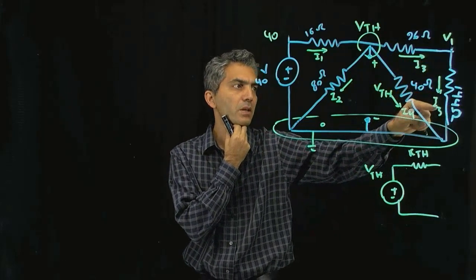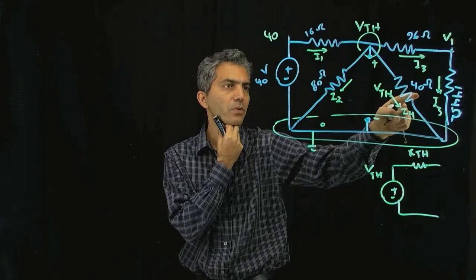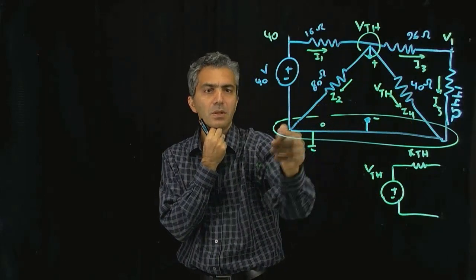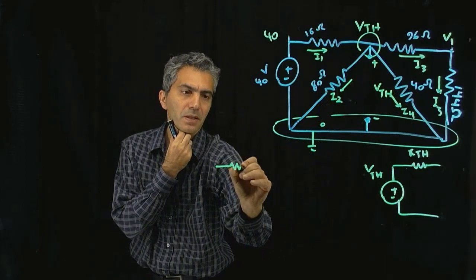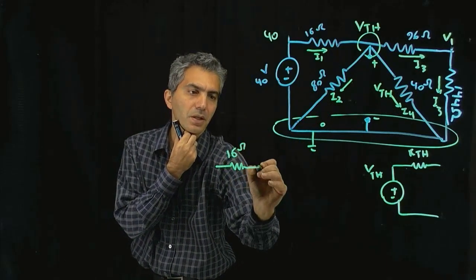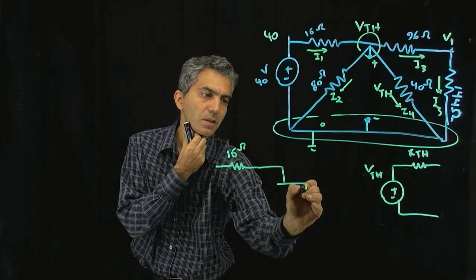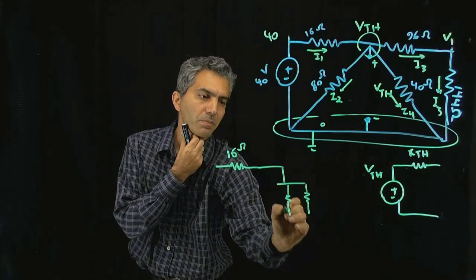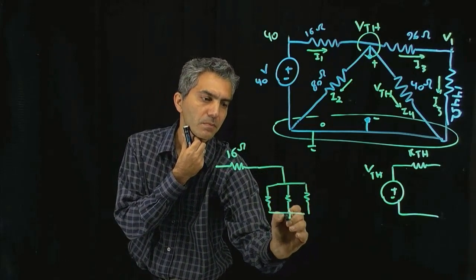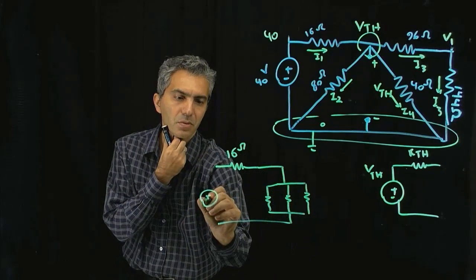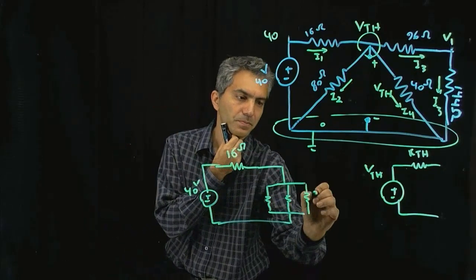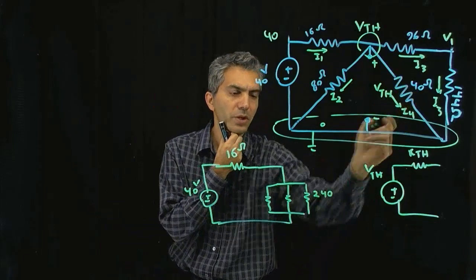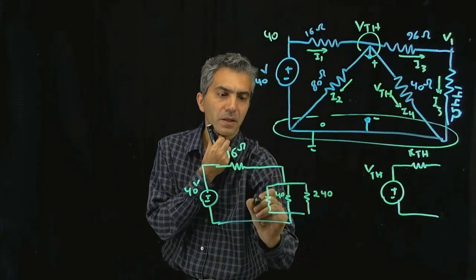Once I do that, that 240 ohm resistor is in parallel with 40 ohm in parallel with 80 ohm. I'm going to quickly redraw that circuit, there's a 16 ohm here and then these three resistors that are in parallel and then all that is connected to a 40 volts.